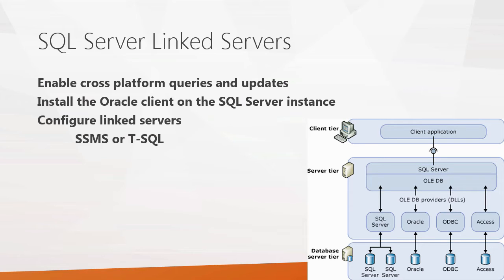In order for this to happen, you need to install the Oracle client software on your SQL Server instance. You would basically download the Oracle client from the Oracle site, install it on your SQL Server instance, and that is what's going to give you the network connectivity that you need. After that, you can go ahead and configure your link servers using SQL Server Management Studio or T-SQL.